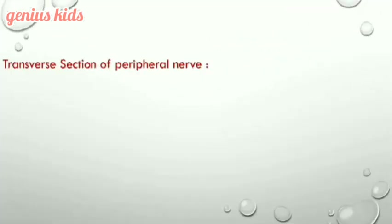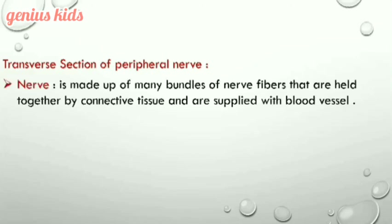On the other hand, what is a nerve? A nerve is made up of many bundles of nerve fibers that are held together by connective tissue and are supplied with blood vessels.